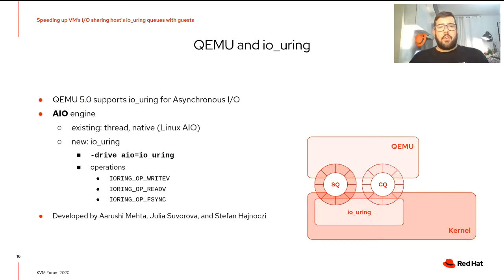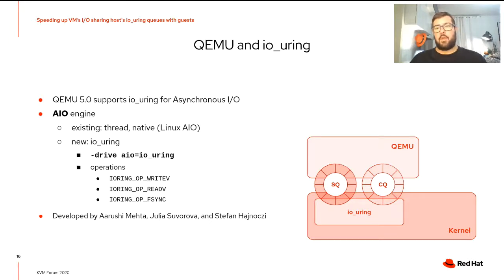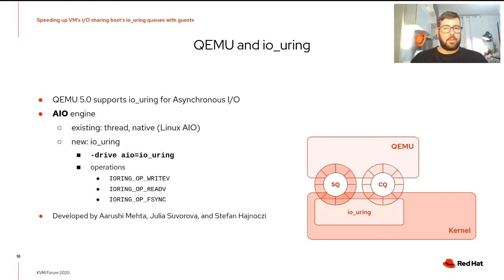Starting from QEMU 5.0, released in April this year, IOUring is available in the QEMU asynchronous I/O subsystem. Thanks to Arushi, Yuli, and Stefan, we have a new AIO engine that we can use with the dash-drive option. The engine performs standard block I/O operations — read, write, fsync — using the IOUring queues and operations.